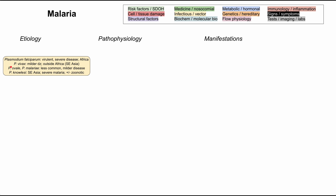In comparison, Plasmodium vivax causes milder disease and is typically found outside of Africa, such as in Southeast Asia. Plasmodium ovale and P. malariae are also less common and cause milder, less severe disease. Lastly, the most recently discovered, Plasmodium knowlesi, is found in Southeast Asia, causes severe malaria, and in some cases is thought to be zoonotic.